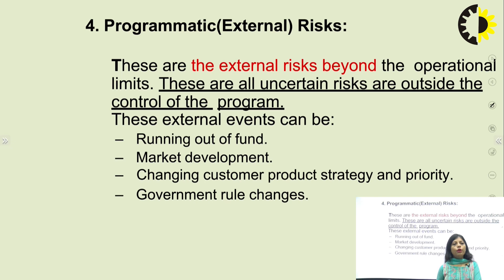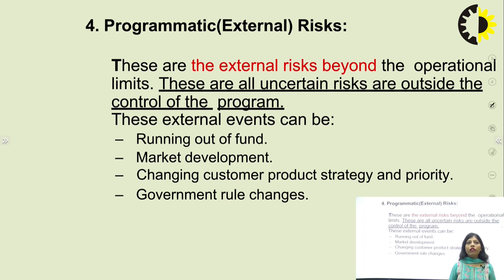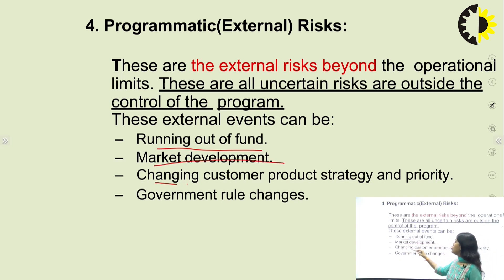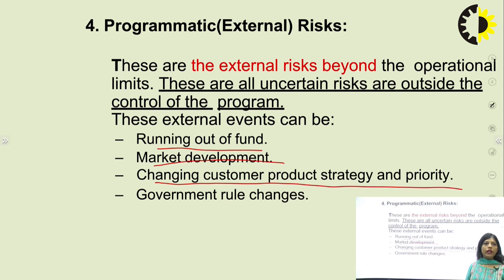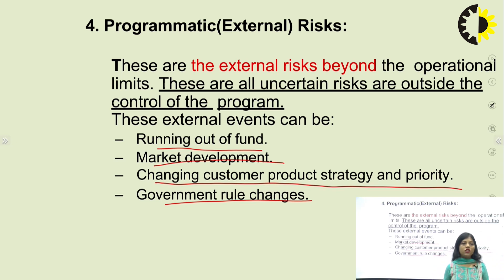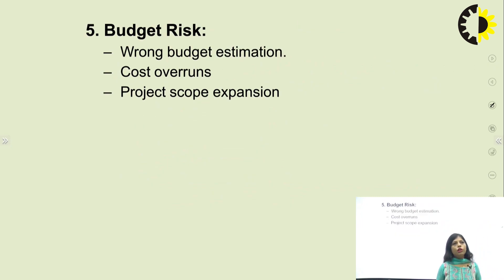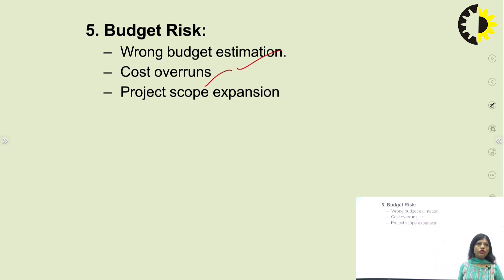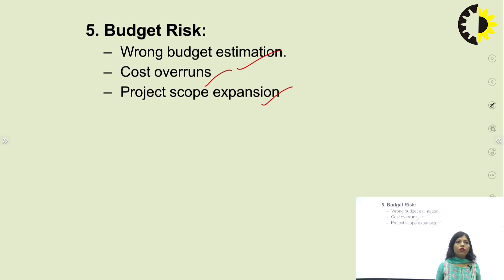External risks can include running out of funds, rapid market development, changing customer product strategy and priorities, and government risk management rule changes — all reasons that are out of bounds or control. Budget risk is the risk related to cost, such as wrong budget estimation, cost overruns of the project, and project scope expansion — when we expand the project, we also expand the budget.